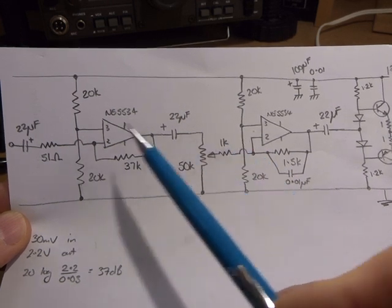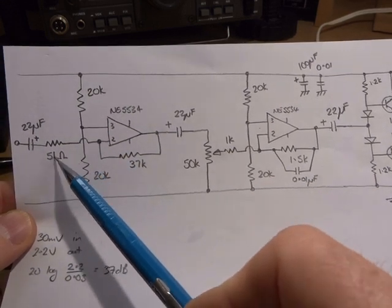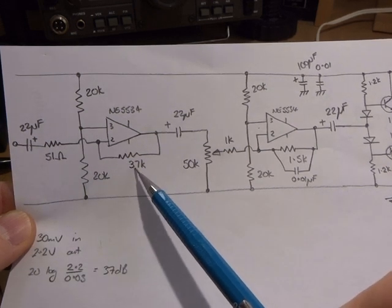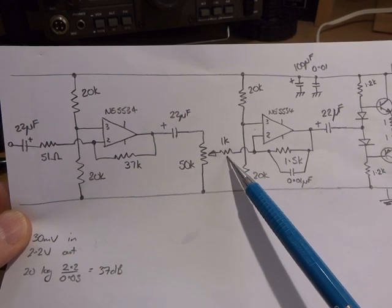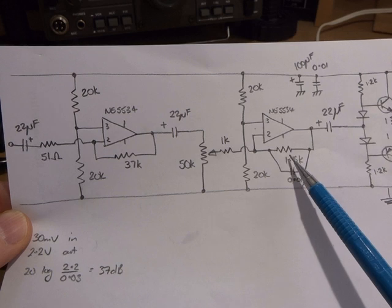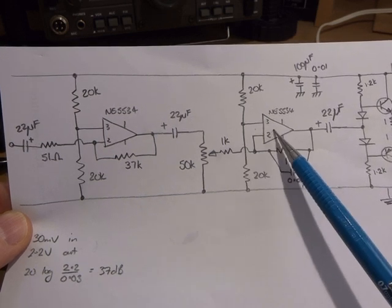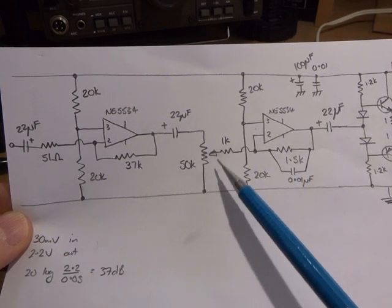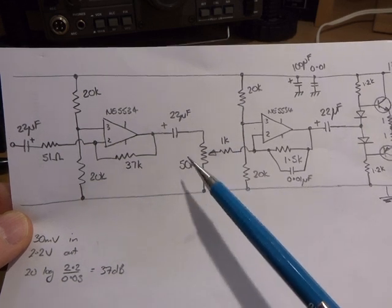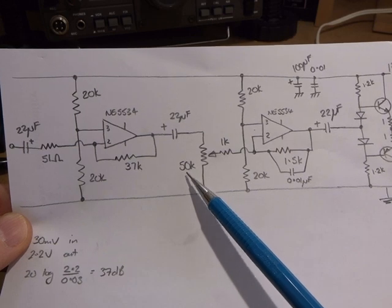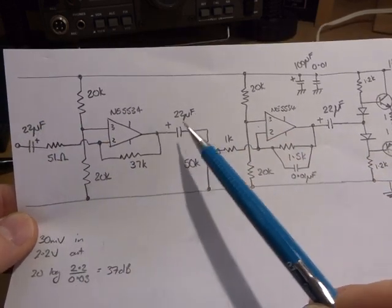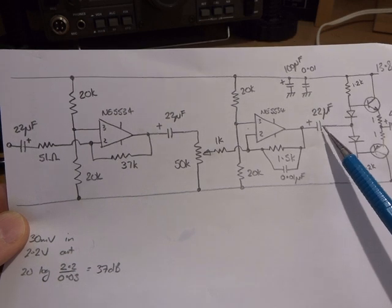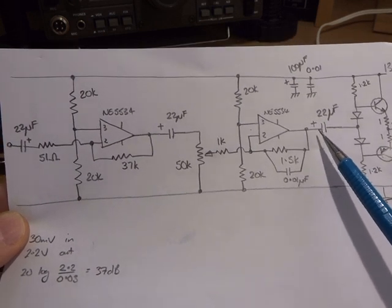There goes that 51 ohm resistor coming in, and for the feedback, 37k for the first one. For the second one I've just arbitrarily chosen the input resistance to be 1k and I'm just playing around with that value there to set the overall gain for that particular stage. Halfway between the two is a 50k ohm pot for the volume control. The other thing too which I just used for this one were 22 microfarad capacitors as opposed to 10 microfarads.